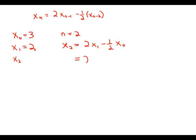So x sub 2 equals 2 times x1. So that's 2 times 2 minus 1 half times 3. So this is 4 minus 3 halves. This is 5 halves. So x2 is 5 halves.